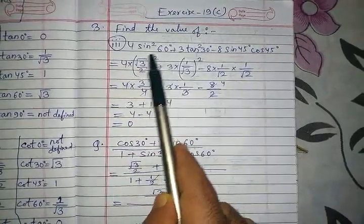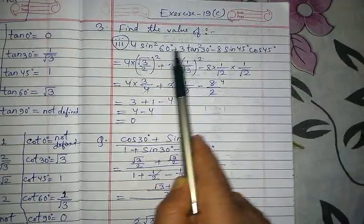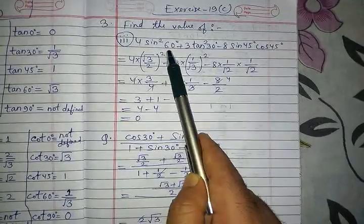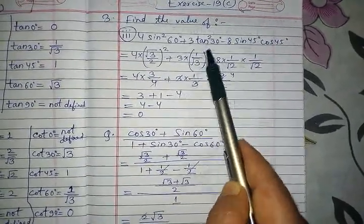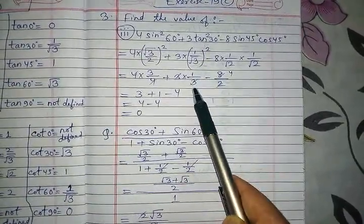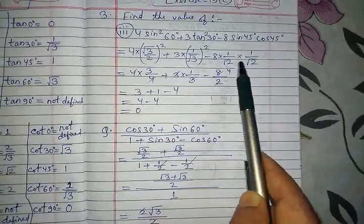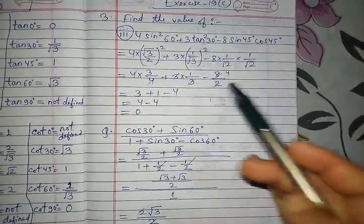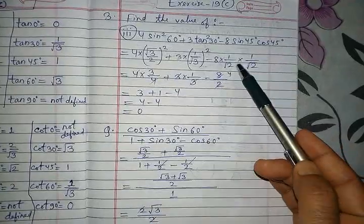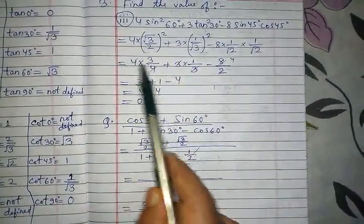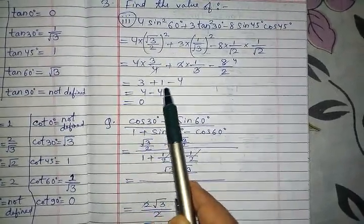Now solving: 4·(√3/2)² — the root and square cancel, leaving 3, and 2² = 4, so this is 4·(3/4) = 3. Plus 3·(1/√3)² = 3·(1/3) = 1. Minus 8·(1/√2)·(1/√2) = 8·(1/2) = 4. So 3 + 1 − 4 = 0. The answer is 0.